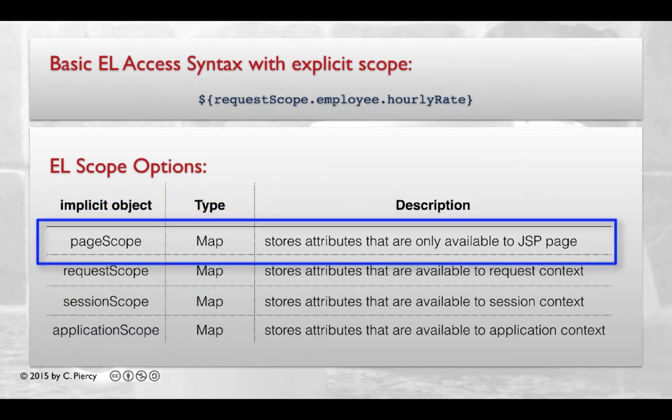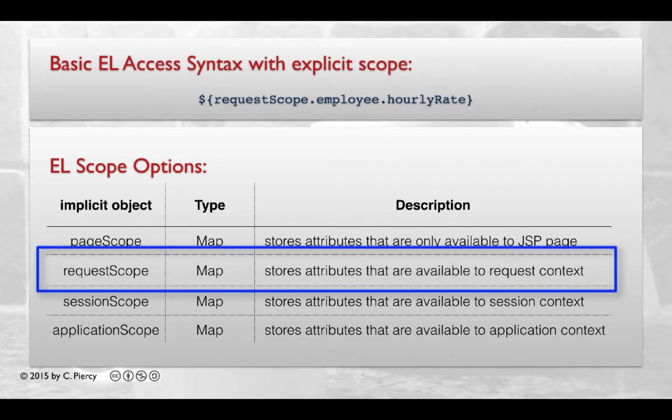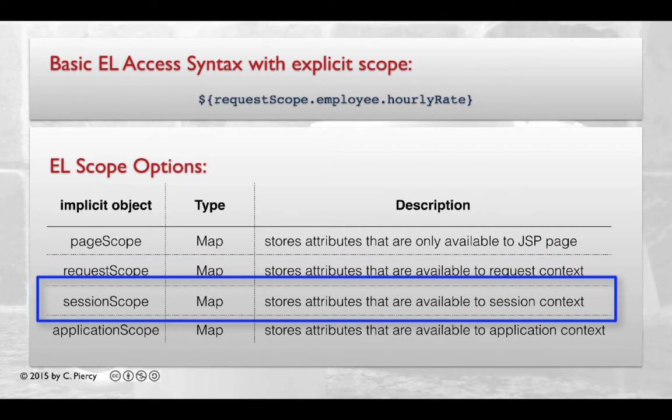pageScope stores the attributes that are only available to the current JSP page. requestScope stores attributes that are available to the current request and can be used by many components up until the time that the response for that request is sent.